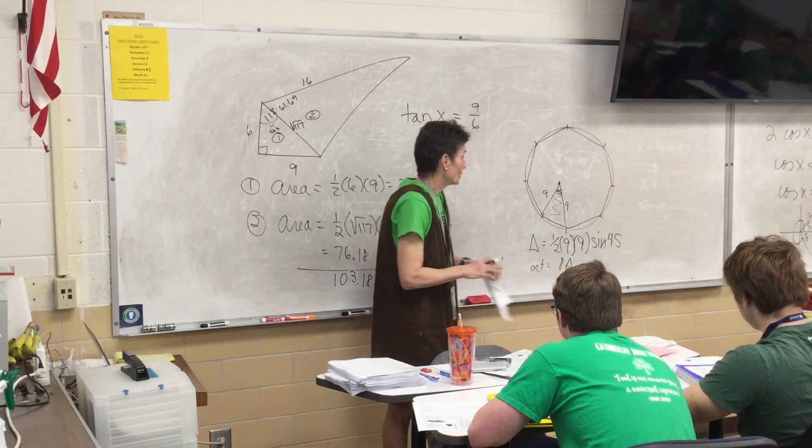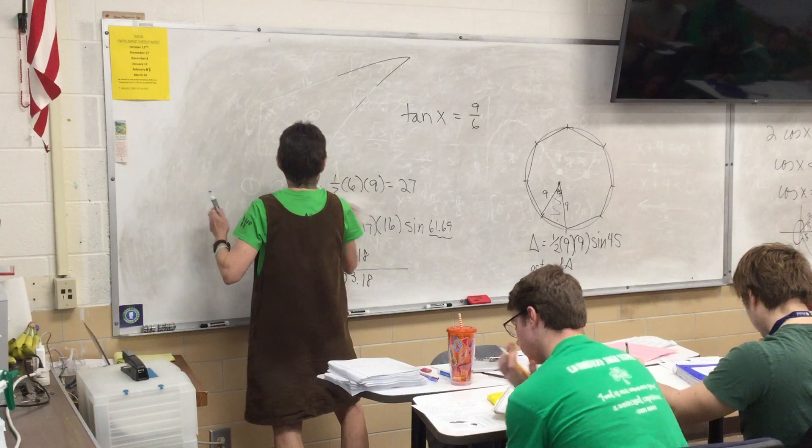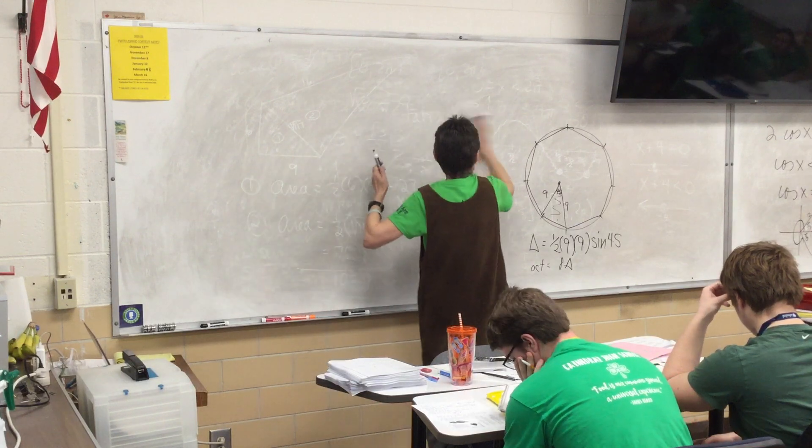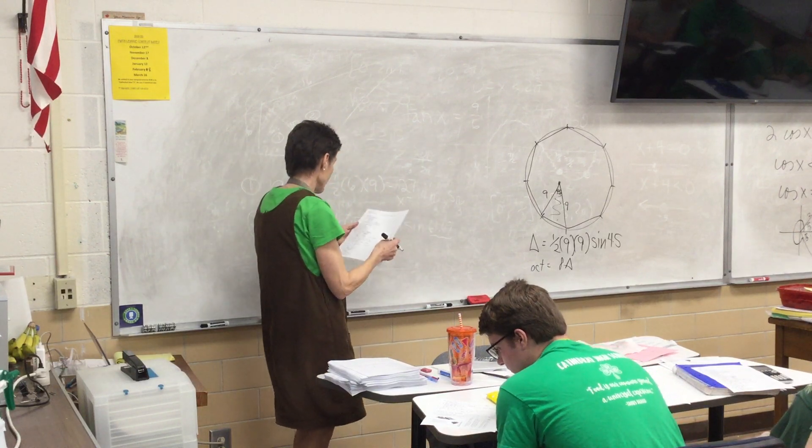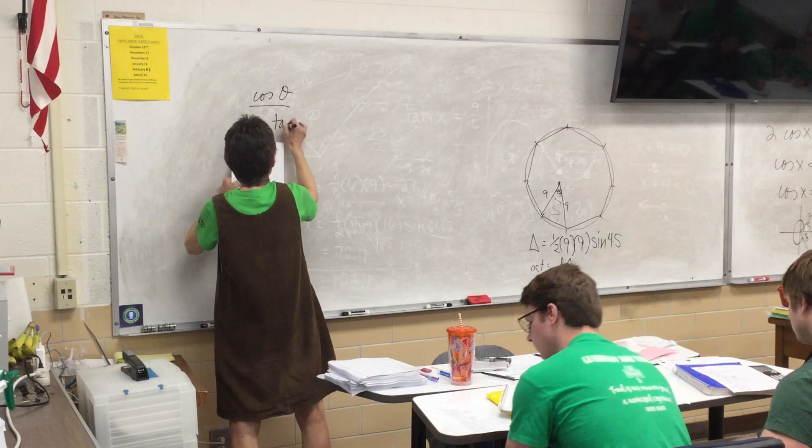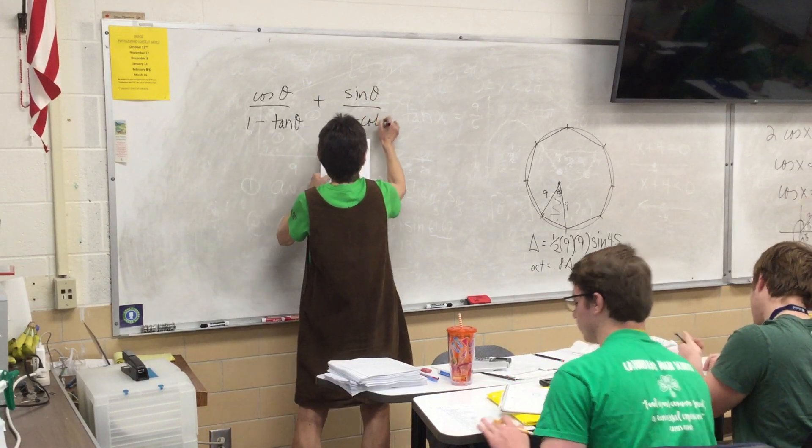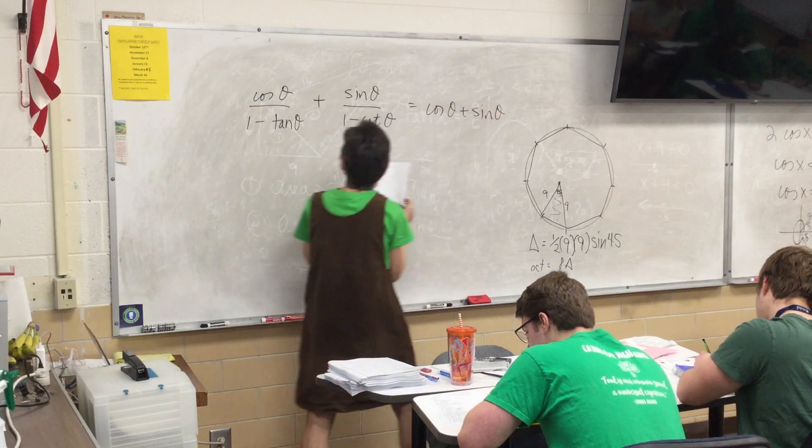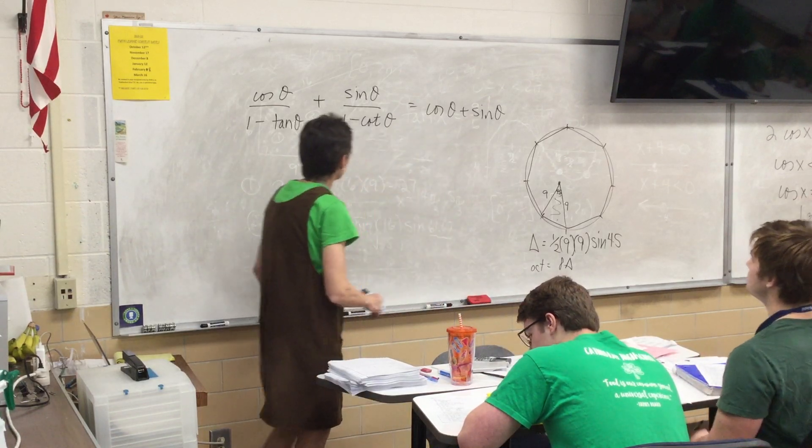Yep. Okay, so the triangle is one half nine nine sine 45. There's other ways to do it, but that's the quickest, fastest way to do it. And then so the octagon will just be eight of the triangle. So I'll just times, I'll type that in and times it by eight, and that will be the answer to the problem. Okay. All right, anybody see anything else? It's a two-sided sheet now.